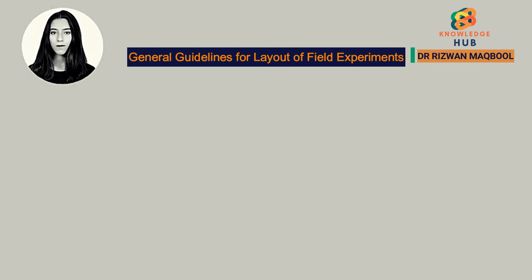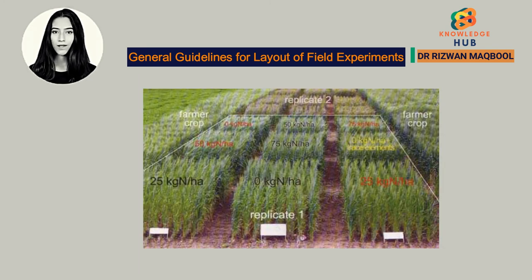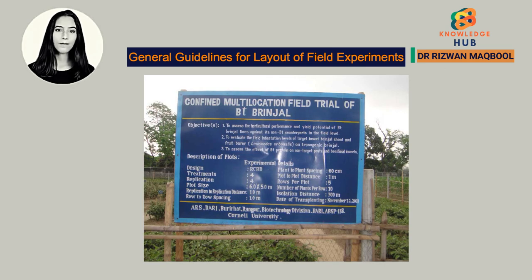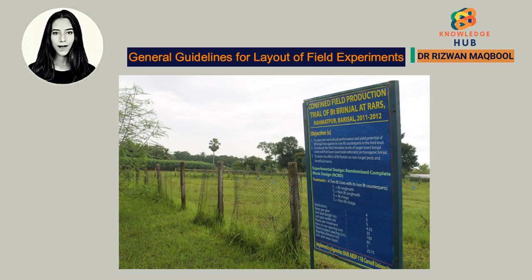10. In fertilizer, fungicidal, and herbicidal experiments, one control (0) should be included in the level of a factor. Similarly, a standard variety should be added while testing new varieties. 11. A board should be fixed in the field showing the following information: a. Name of the experiment, b. Design of experiment, c. Replication numbers, d. Factors or treatments under study, e. Date of sowing, etc.